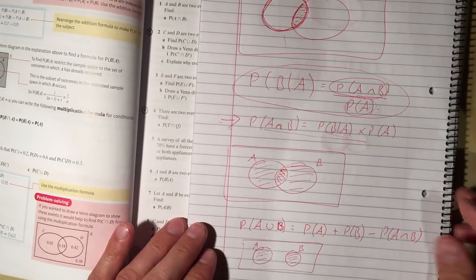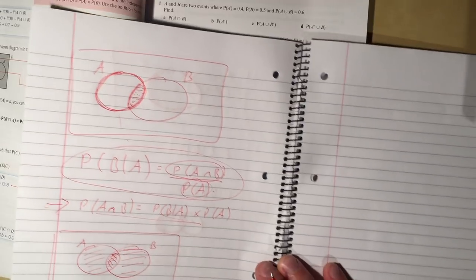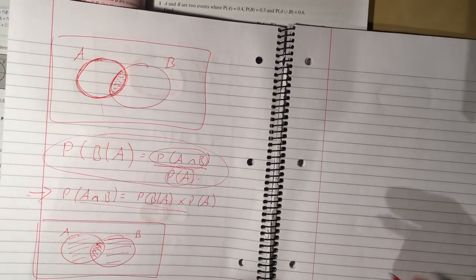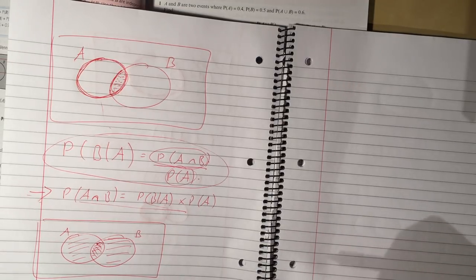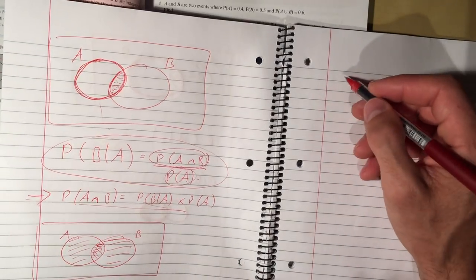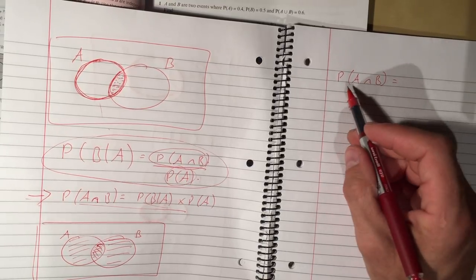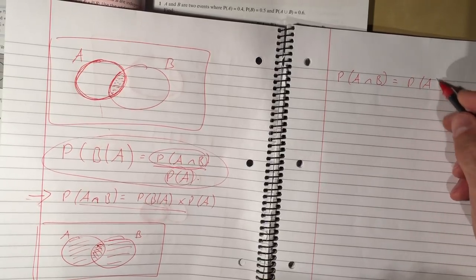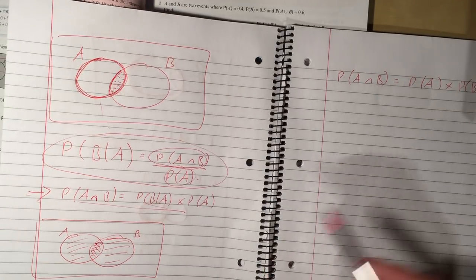We also have independent events, and this is something examiners are very keen on testing — particularly on the AS papers. In all the practice materials we've seen this question quite a bit. You should be prepared to say: for independent events, the probability of A and B happening is the probability of A times the probability of B. And again, that's a fact we've seen before — if you've got AND in probability, it's times.